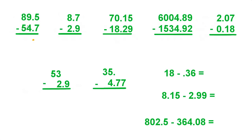So again we start in the tenths place. 5 minus 7 — we can't do that, we have to borrow from the 9. Make that an 8, put the one right there. 15 minus 7 is 8. 8 minus 4 is 4. And 8 minus 5 is 3.